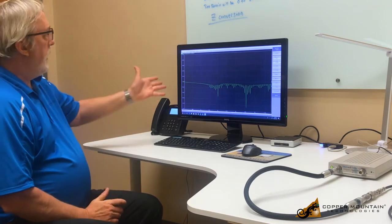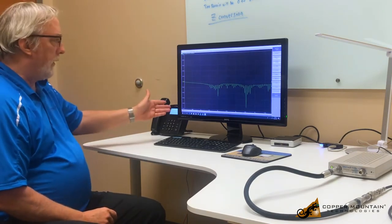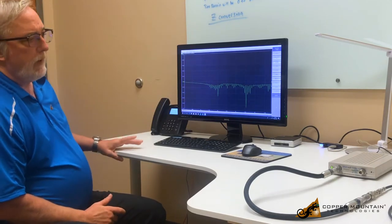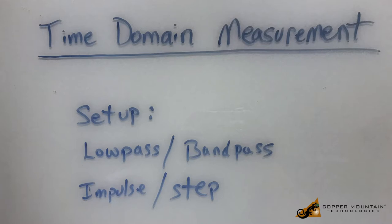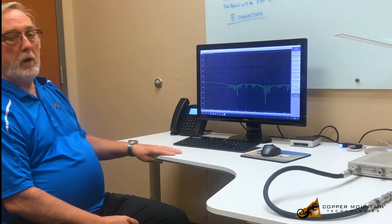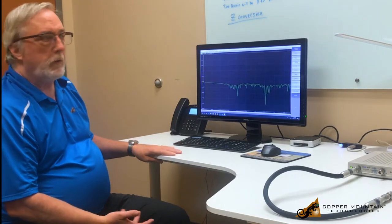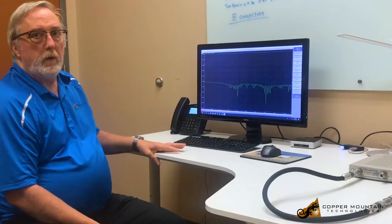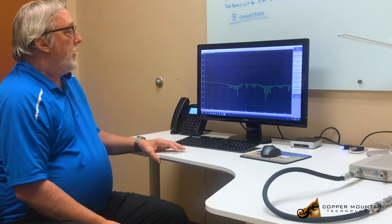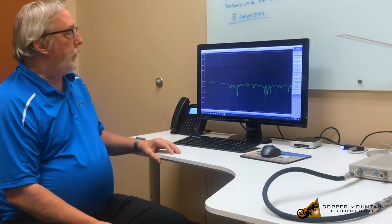On my screen here I have S11 being measured from 20 kHz to 4.8 gigahertz. Now I'm going to make some changes and do the setup required to give us a time domain measurement. I'm going to do a low-pass time domain measurement with step function. The bandpass method is used for time domain measurement through a limited bandwidth such as a filter. The impulse measurement is good for looking at changes in impedances, but I'd like to see the step function because it gives us more information, and the low-pass type gives us even more information if you have access to measurement all the way down to zero.